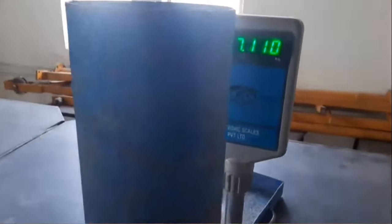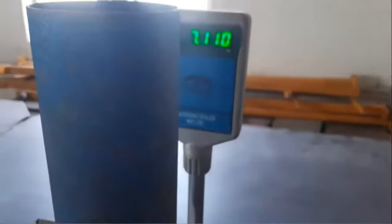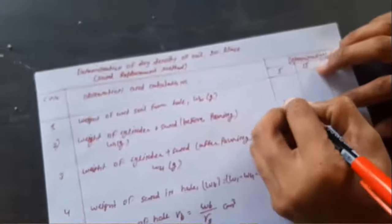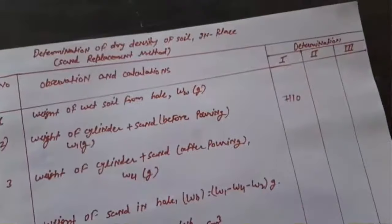Now refill the sand pouring cylinder with the same weight as before — 7110 grams — and record it in the observation sheet. Then go to the field where we need to collect the soil sample for which we have to calculate the dry density.